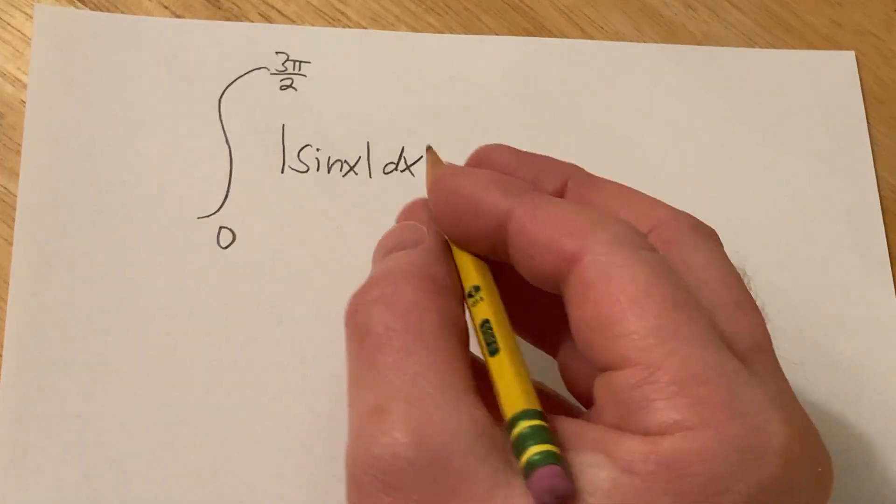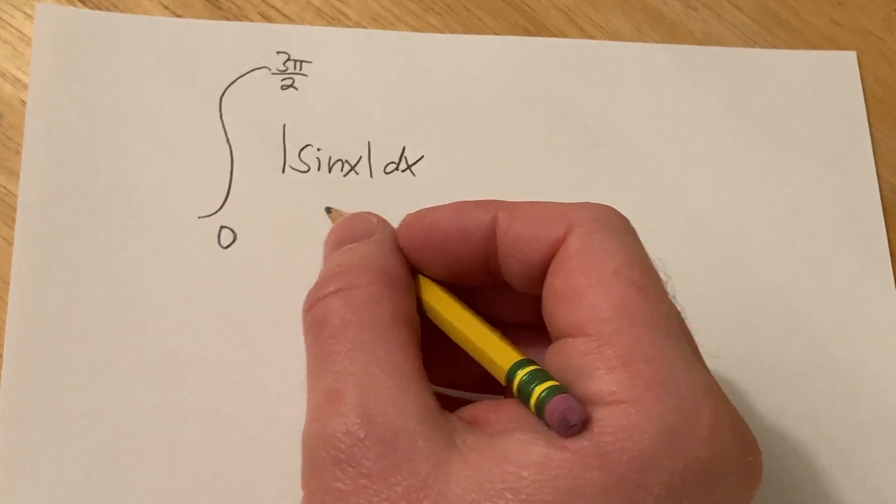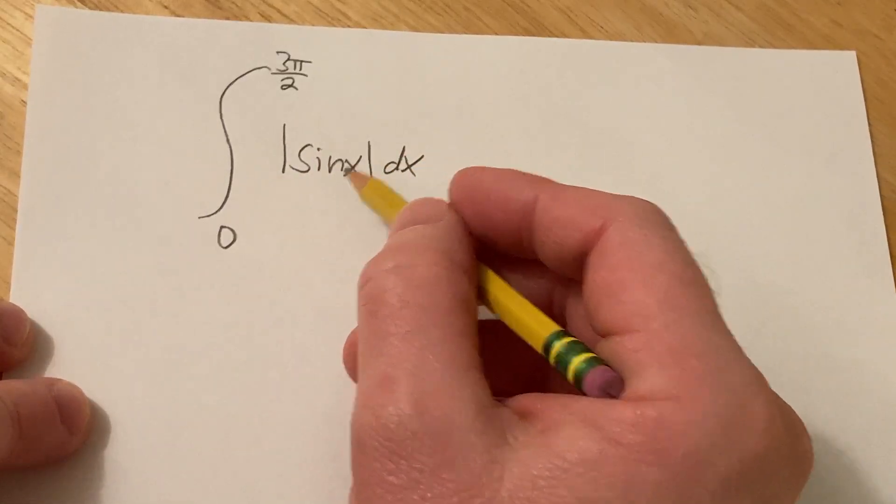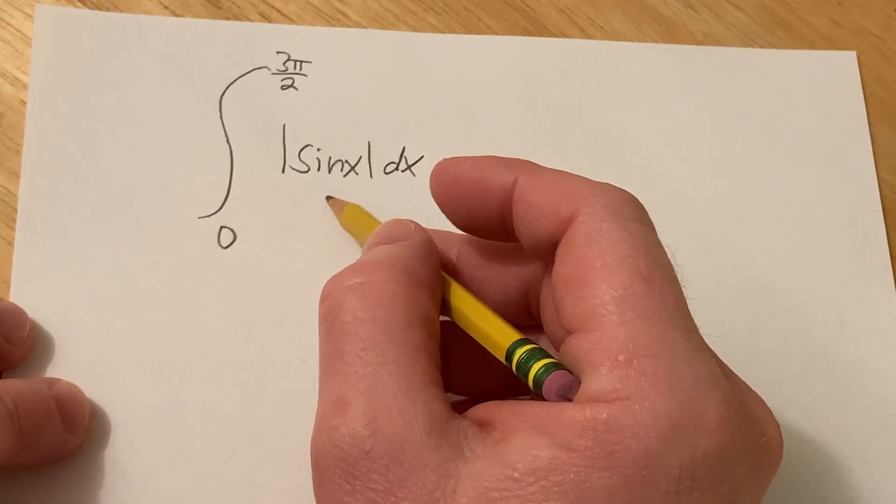Hello, in this problem we're going to integrate the absolute value of sine x from 0 to 3 pi over 2. So in order to do this problem, we have to get rid of the absolute value.